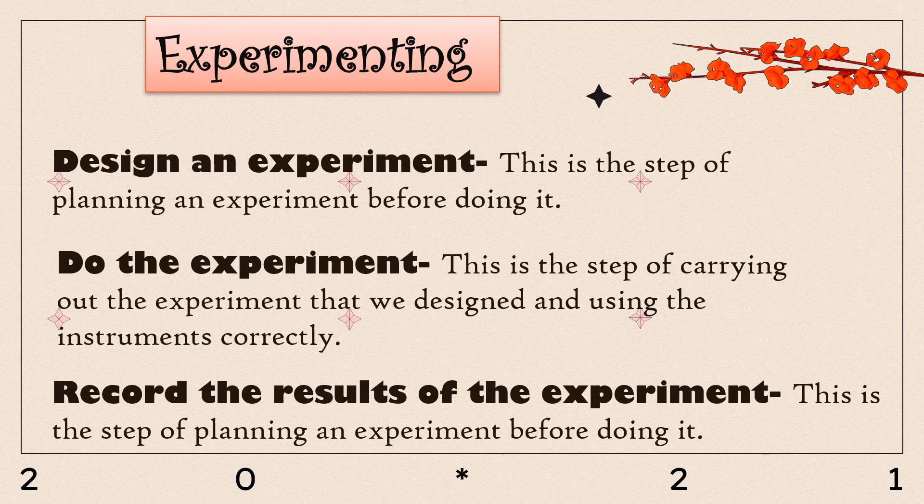Experimenting. We have three types. First: design an experiment. This is the step of planning an experiment before doing it. Next: do the experiment. This is the step of carrying out the experiment that we designed and using the instrument correctly. And last: record the result of the experiment.